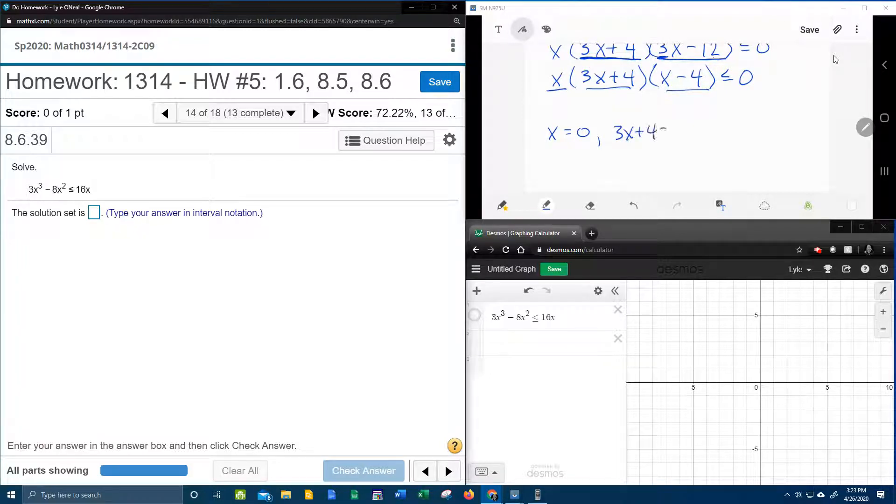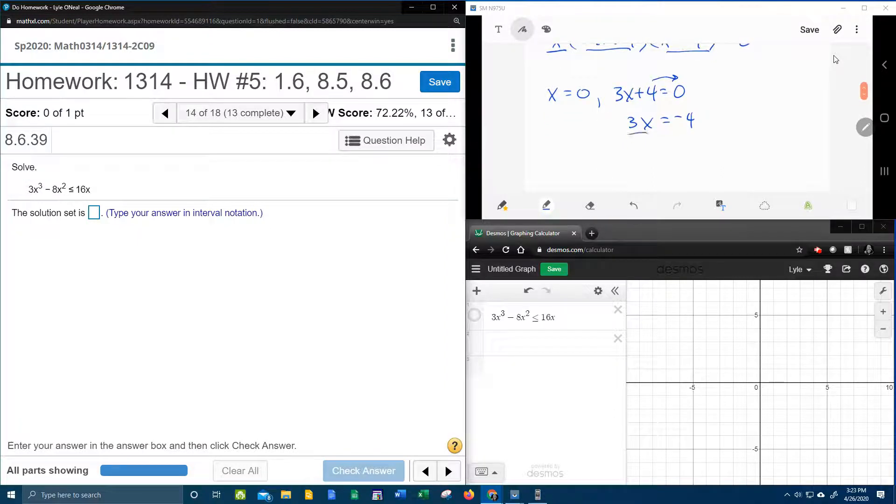3x plus 4 equal to 0. I need to solve that for x. Moving the 4 over and dividing by 3. It says that x is going to be negative 4 thirds.